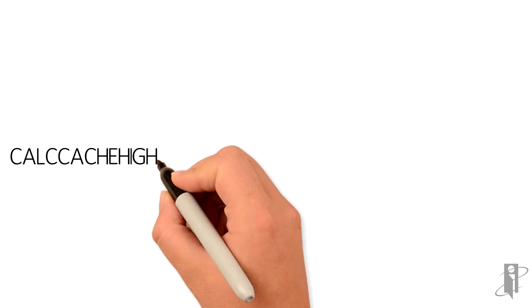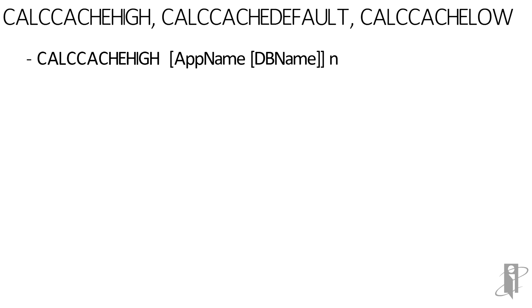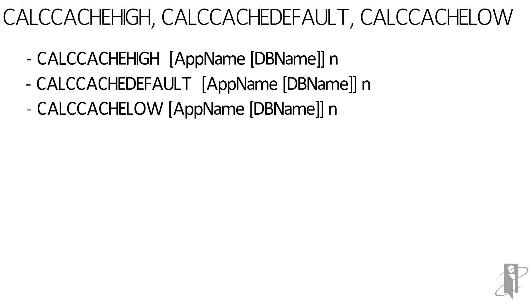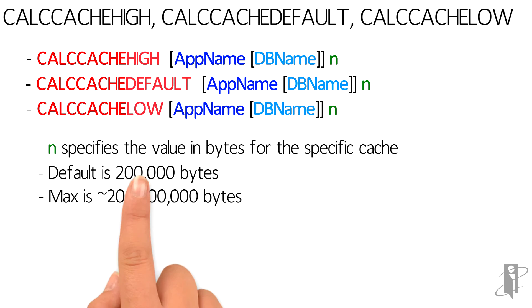The other three sister commands — calc cache high, calc cache default, and calc cache low — are used to set specific cache amounts for either the whole server, a specific application, or a specific database name in that application. The value at the end is in bytes for the cache you're trying to set. The default is 200,000 bytes — not kilobytes or megabytes, but bytes. The maximum is about 200,000,000 bytes, which is equivalent to about 200 megabytes.